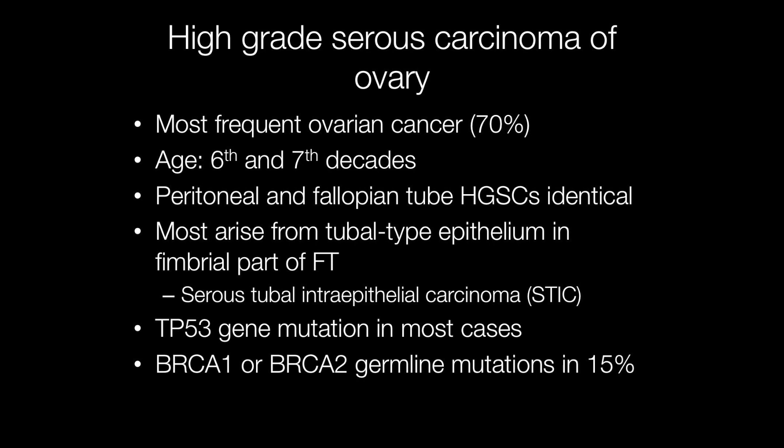However, most arise from the tubal type epithelium in the fimbrial part of the fallopian tube, where the precursor lesion is the serous tubal intraepithelial carcinoma (STIC). The majority of high-grade serous carcinomas have a TP53 gene mutation, and in 15% of cases there are BRCA1 or BRCA2 germline mutations.